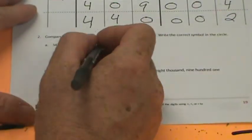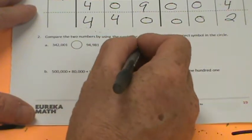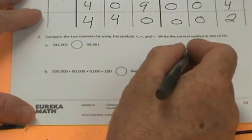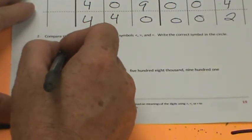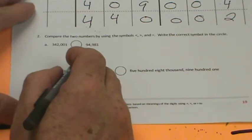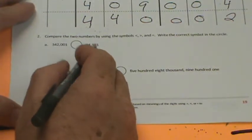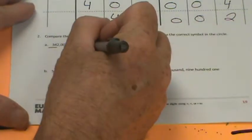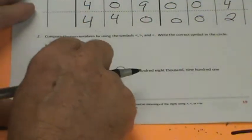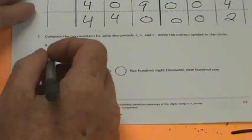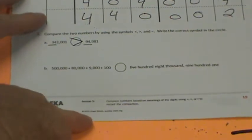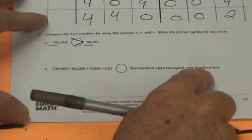Let's go right down here. It says compare the two numbers by using the symbols less than, greater than, and equal. Write the correct symbol in the circle. So you have 342,001 over here. We have 94,981. What's bigger? 342 or 94? Look at the thousands place chart, I mean the periods. 342 is much larger than 94, so the alligator eats 342,001.